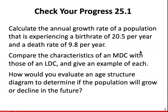In this chapter, they have you calculate the annual growth rate given a birth rate and a death rate, but I am not going to ask you to do this on homework or an exam. You should be able to compare characteristics of more developed countries with less developed countries and know relative population sizes and growth models. Also review age structure diagrams — if given one, you should be able to determine if the population is growing or declining. Please let me know if you have any questions.